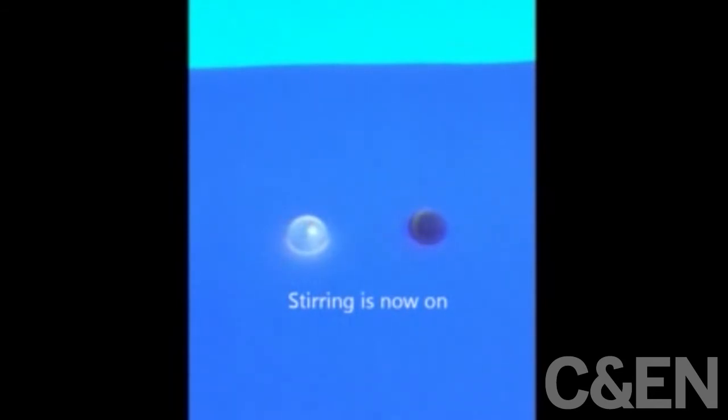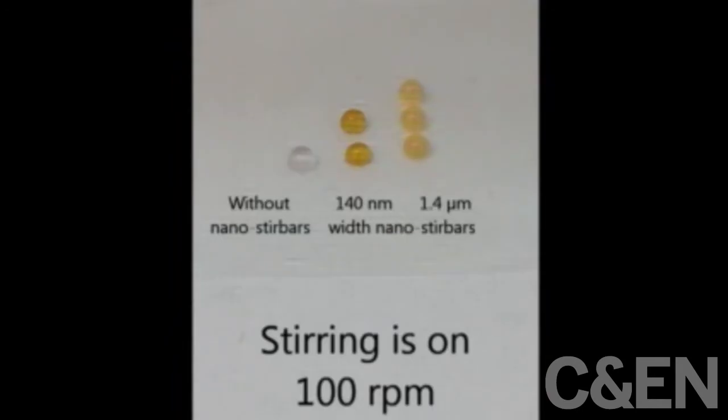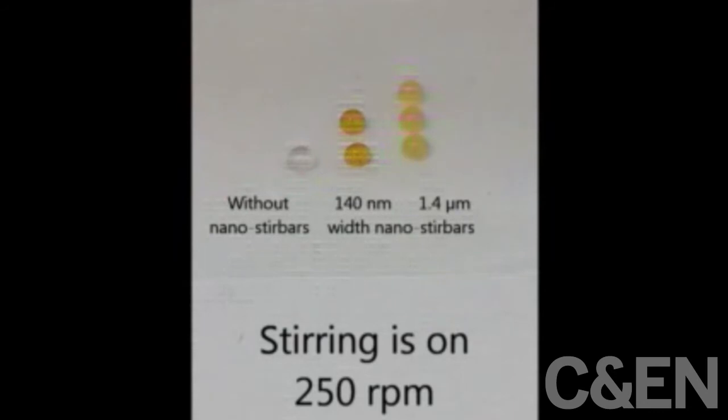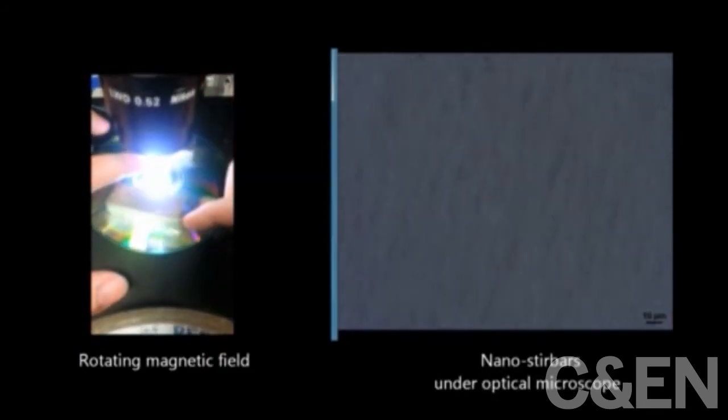You can also see how droplets containing nano stir bars blink in unison when sitting atop a rotating magnetic field, and how they align with the magnetic field when the magnet is rotated.